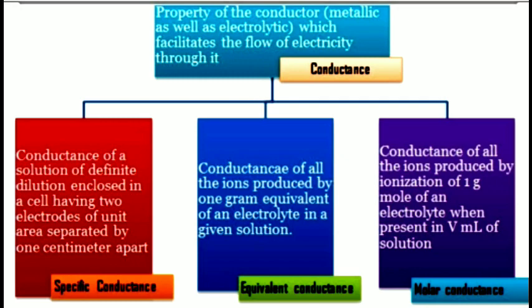Conductance can be measured in three ways. First is specific conductance: the conductance of a solution of definite dilution enclosed in a cell having two electrodes separated by one centimeter. Second is equivalent conductance: the conductance of all ions produced by one gram equivalent of an electrolyte in a given solution. Third is molar conductance: the conductance of ions produced by ionization of one gram mole of electrolyte present in V volume of solution.